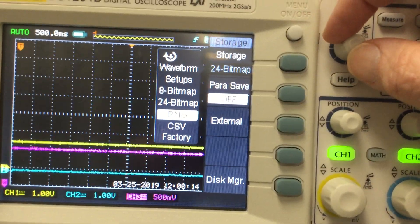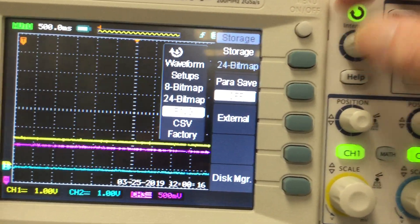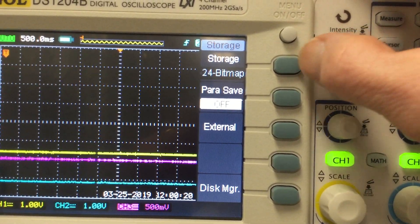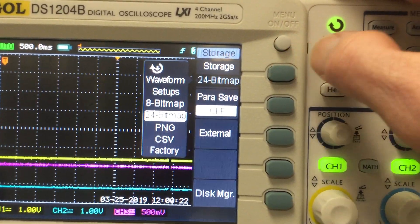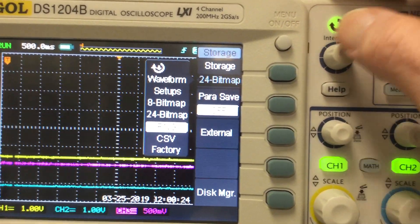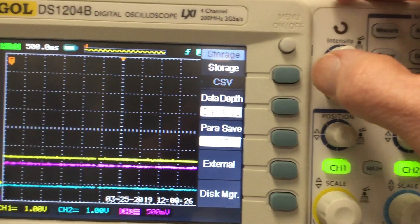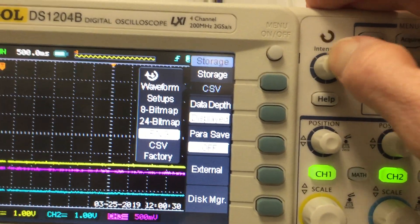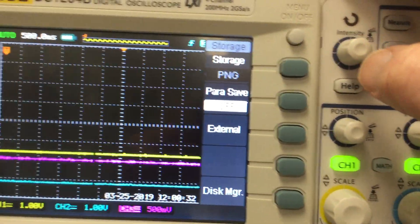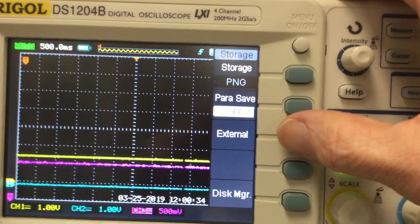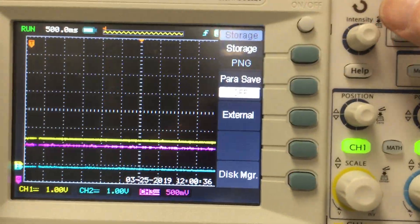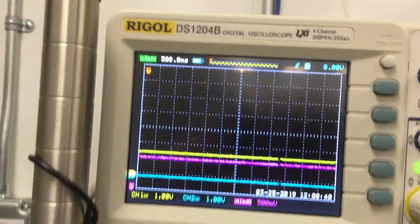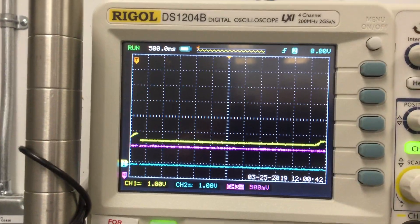Oops, you got to be careful not to twist that when you hit the button. There you go, so now it's on PNG. It has to be on external, and then you hit menu to get that to go away. Now I'll create a waveform.